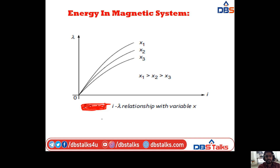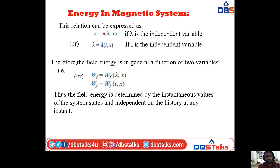This is the I-to-λ magnetization curve diagram. The characteristic diagram is drawn between I and λ — I is on the X axis and λ is on the Y axis. Three curves are drawn by varying values of X: X1, X2, X3. The relation can be expressed as I = I(λ, X) if λ is the independent variable, or λ = λ(I, X) if I is the independent variable.